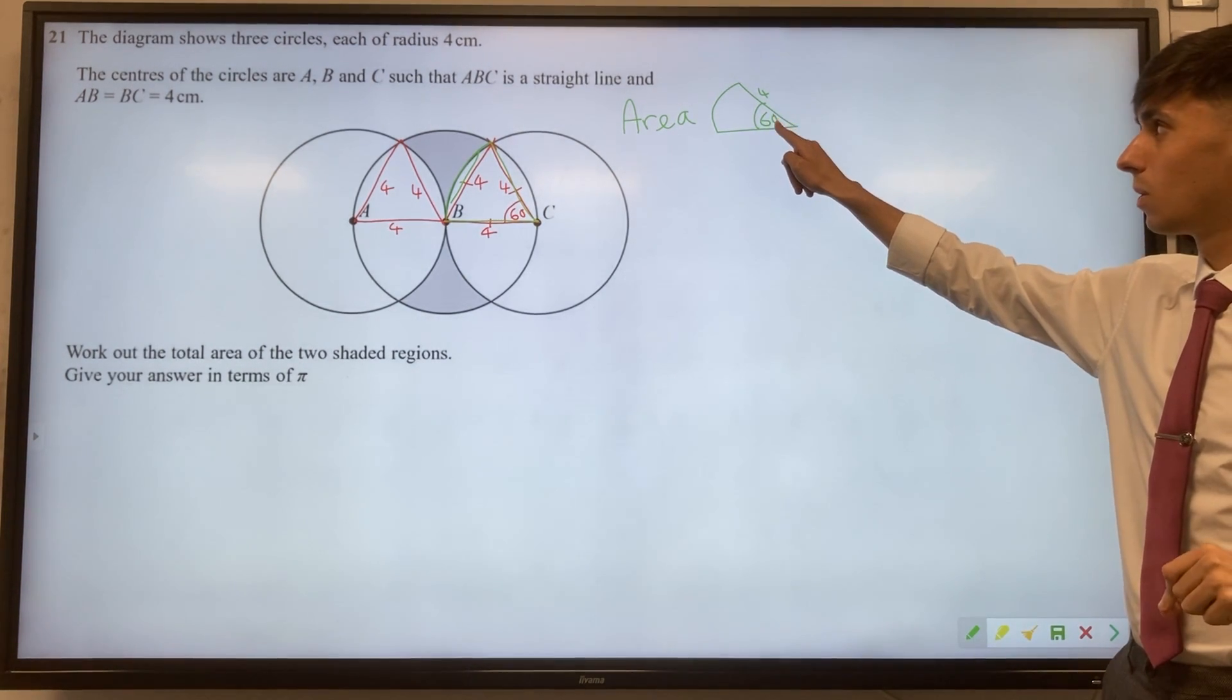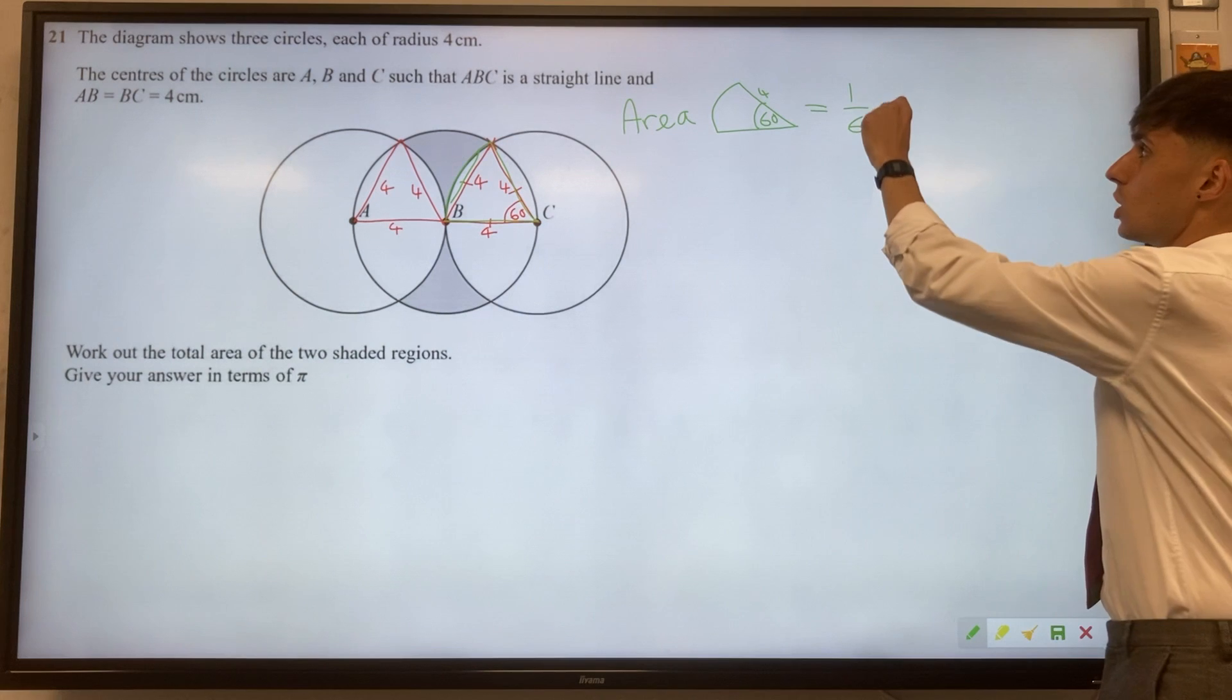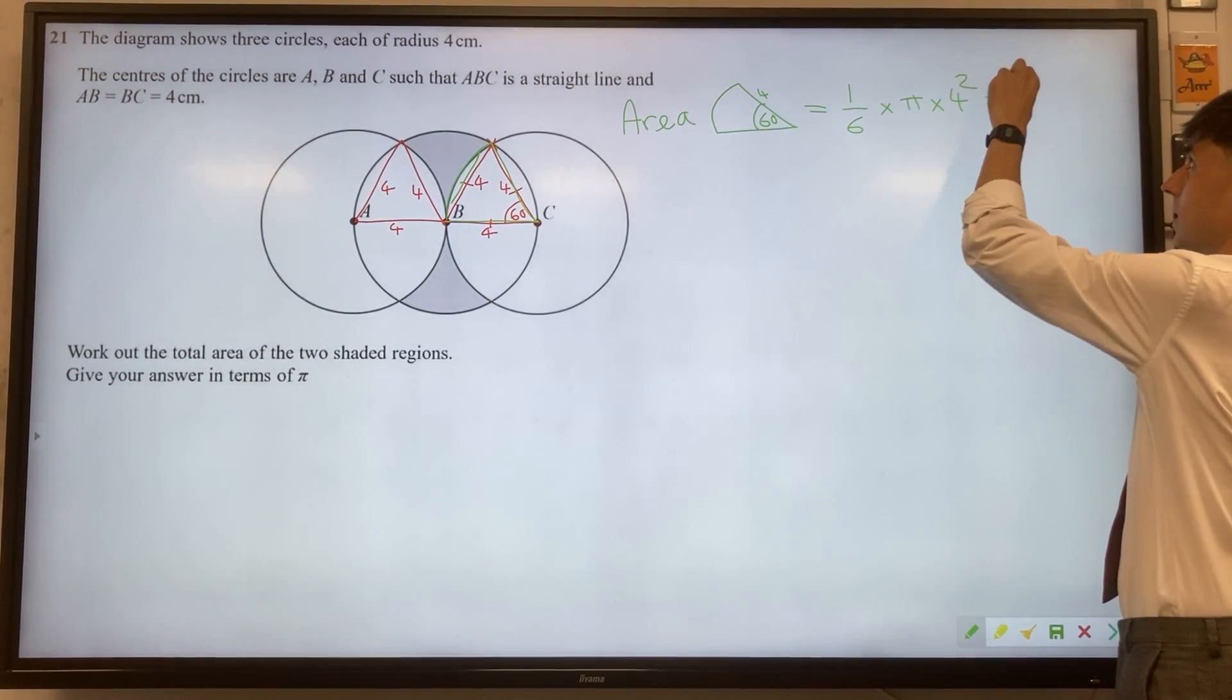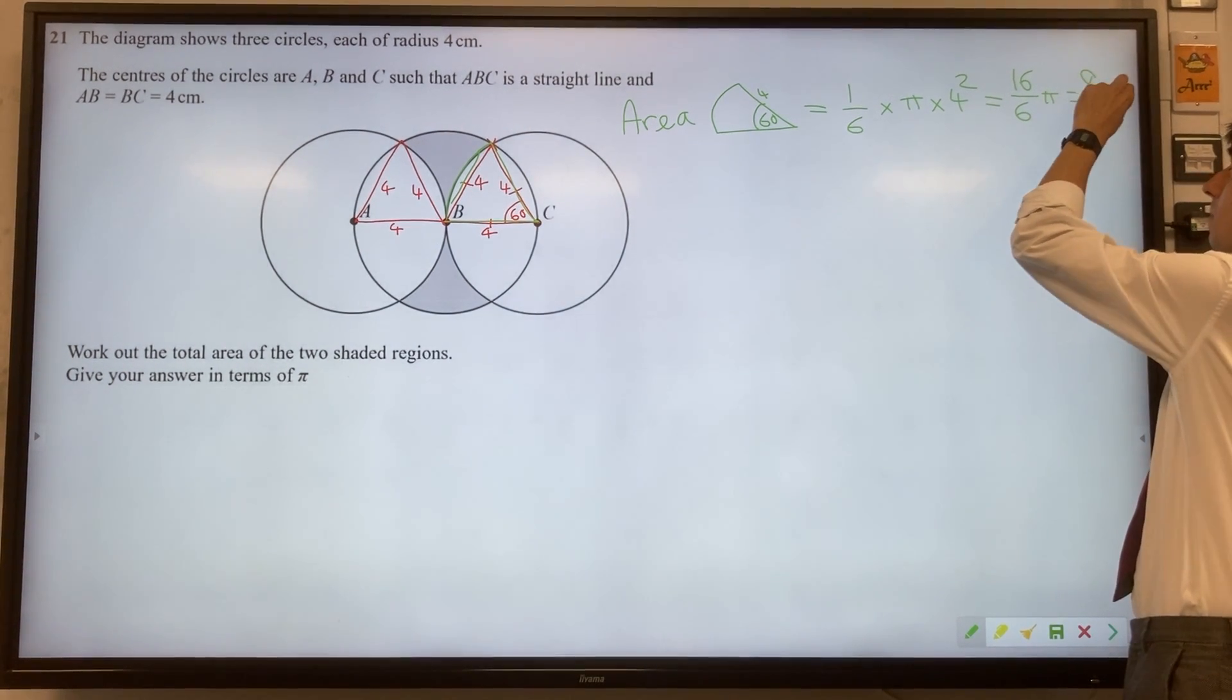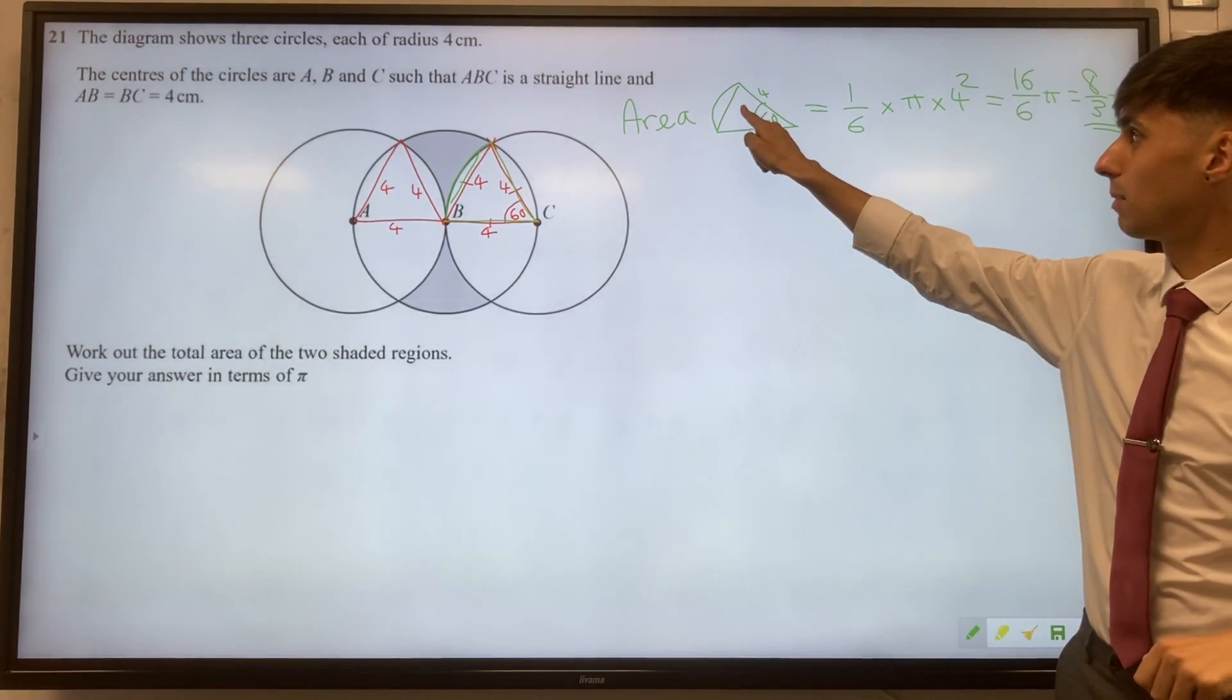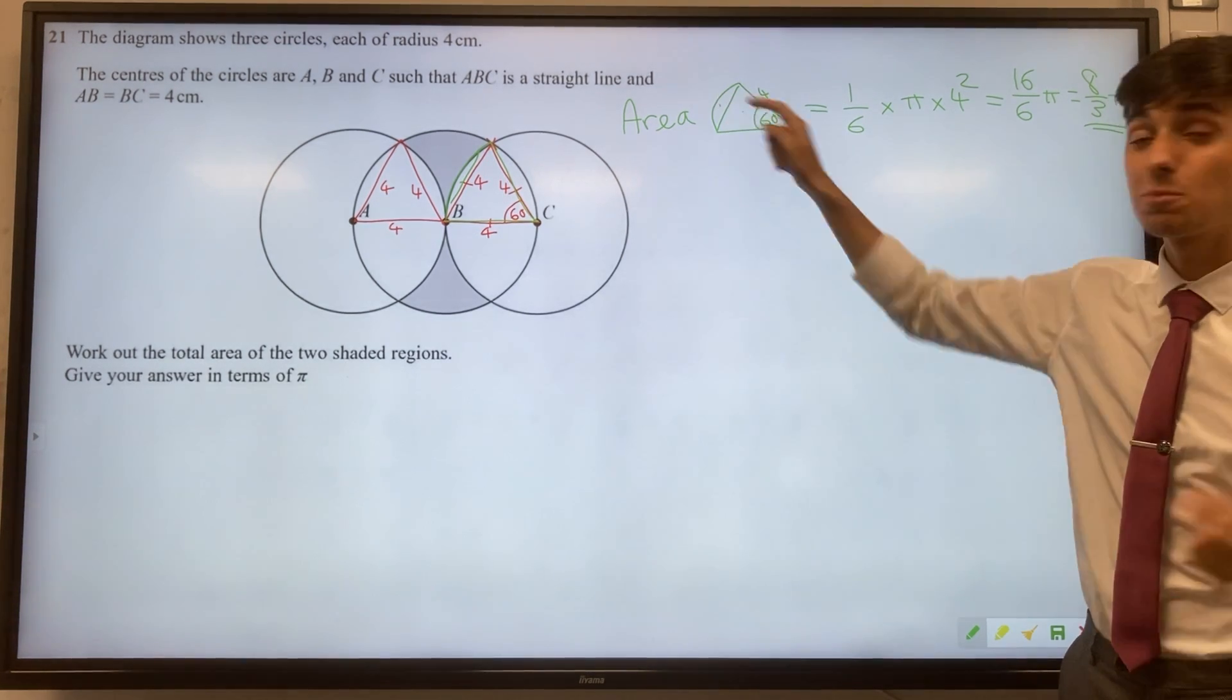This is one-sixth of a full circle where you have an angle of 360. So we've got 1/6 of π times r squared, that's 4 squared, so this would be 16 over 6 π, or to simplify it, 8π/3. That's this full sector made up of the triangle and also the extra part on the edge.